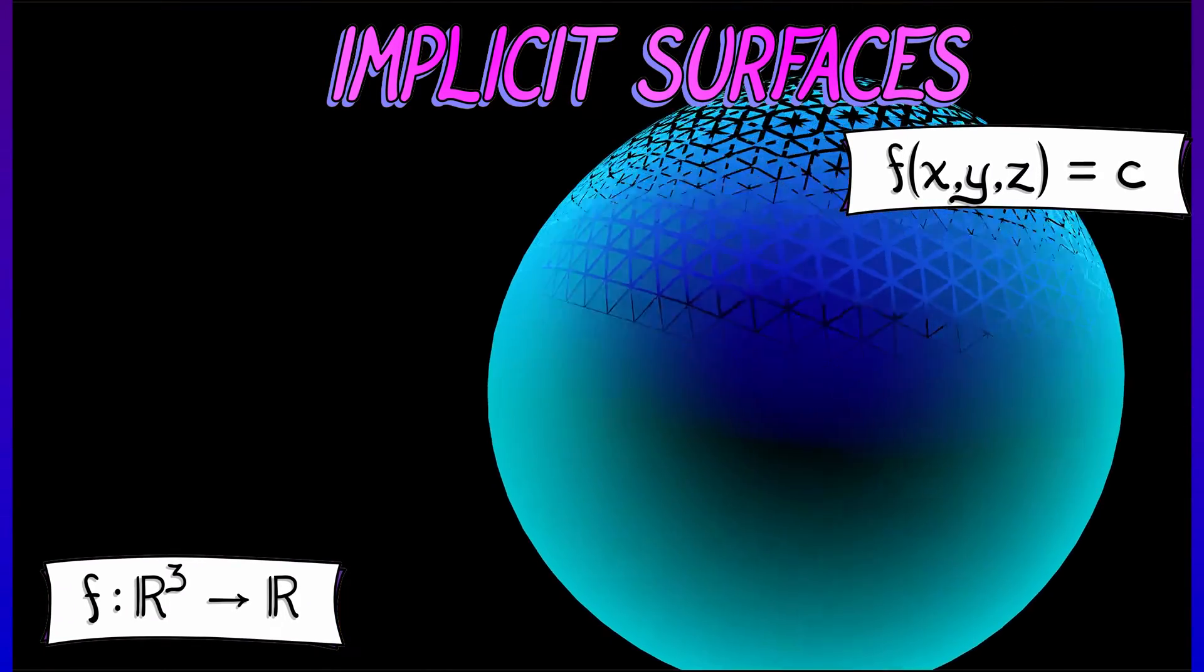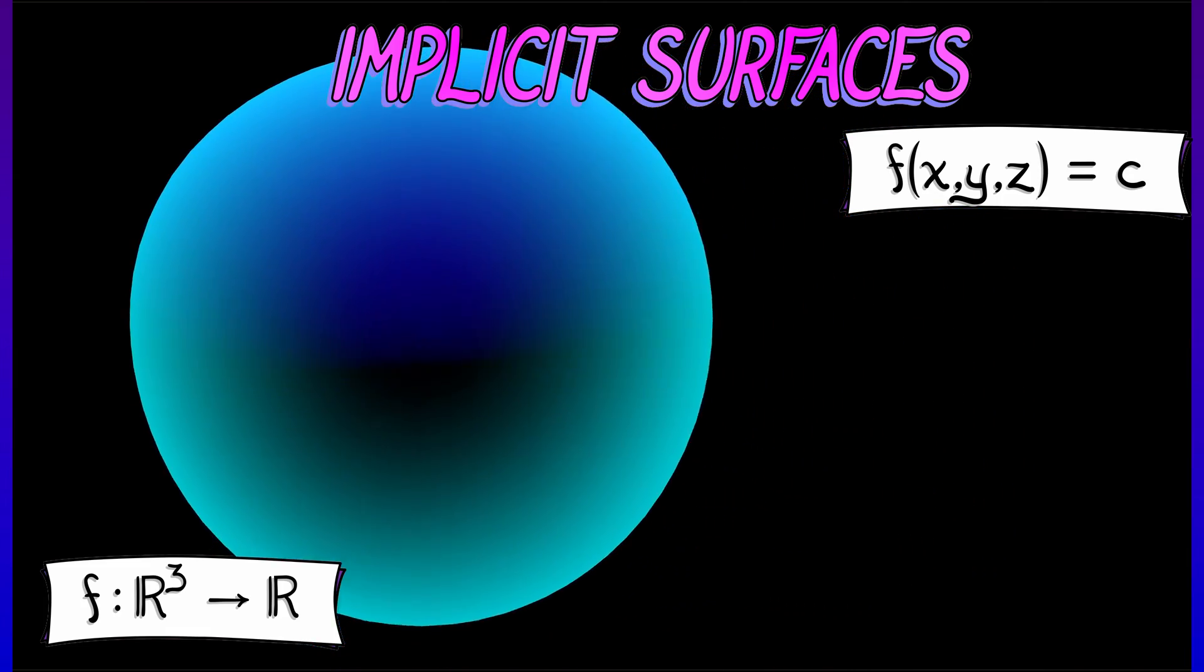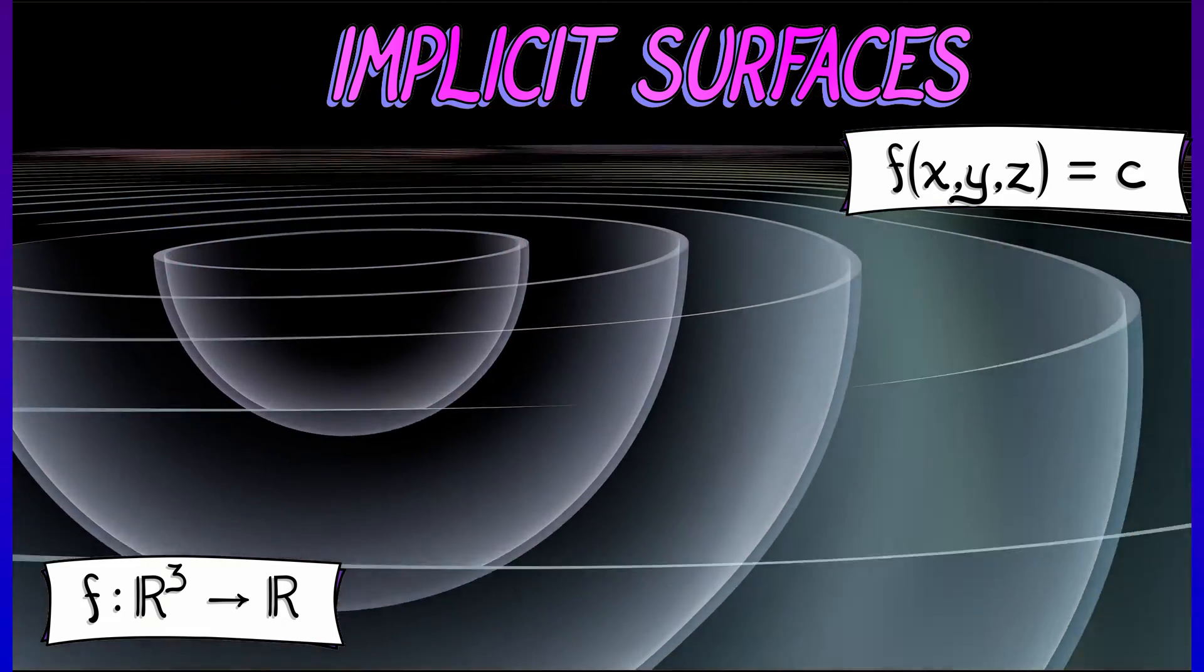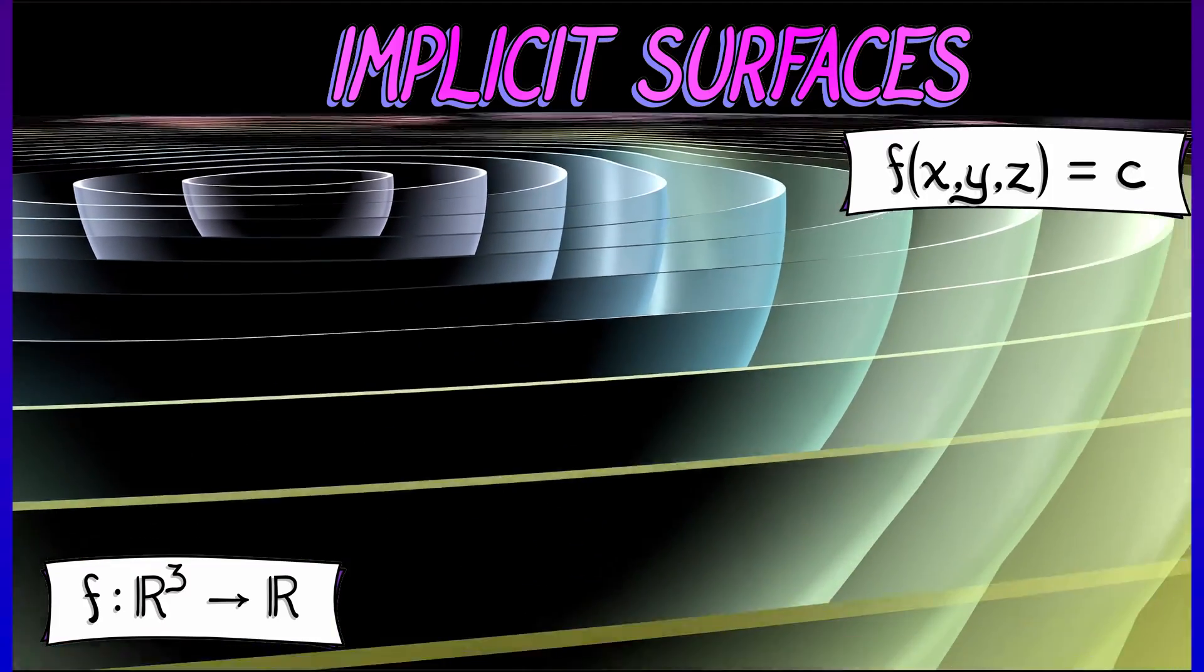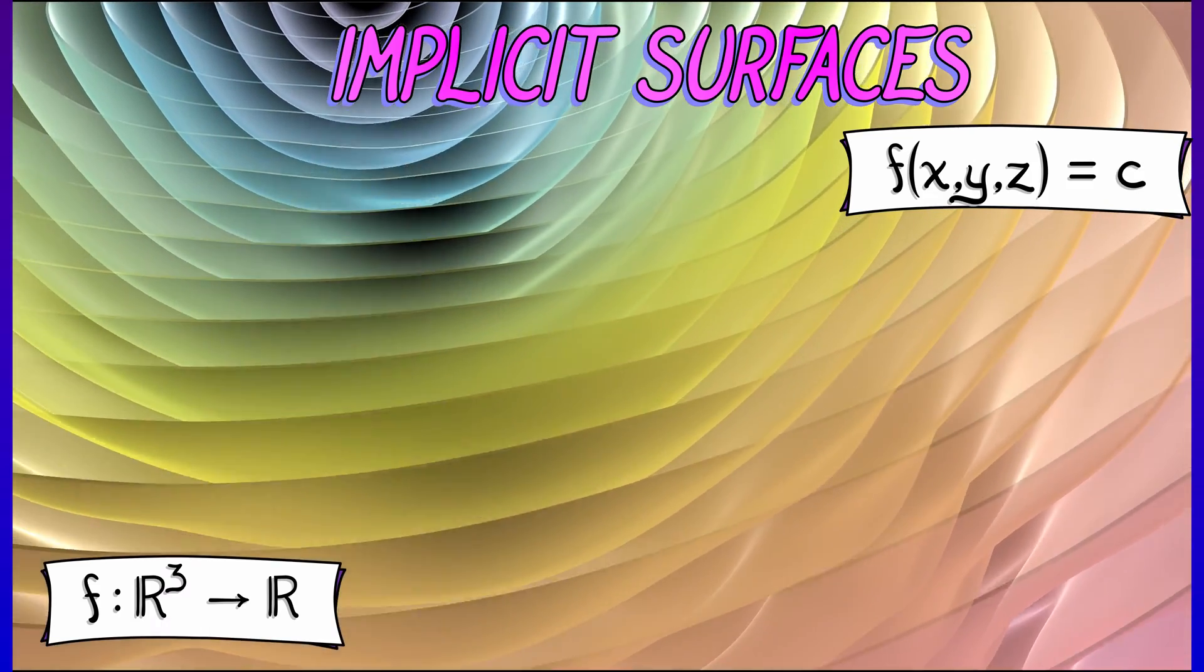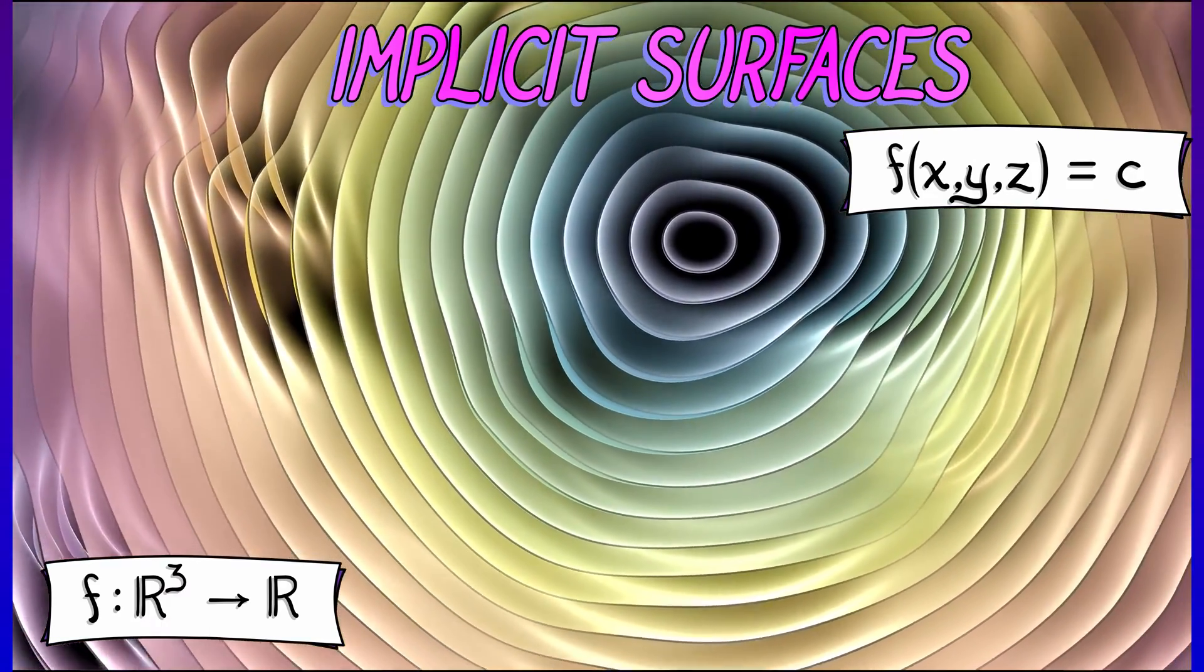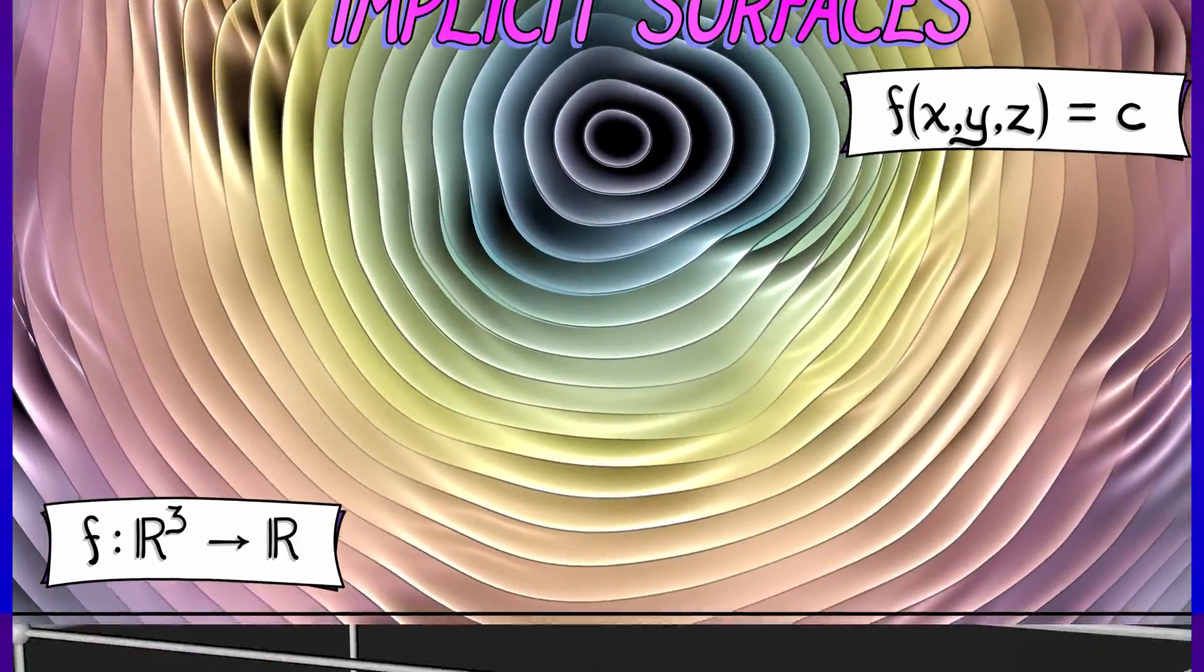Now, the same thing in 3D. Have a function, x, y, z, set it equal to a constant. That's going to give you a surface. If you look at all possible values of that constant, that's going to fill up three-dimensional space with these implicit surfaces. That's a great way to visualize a function with three inputs and one output.